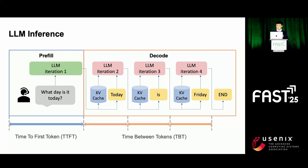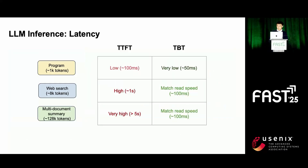We use two latency metrics for LLM inference. One is TTFT, which measures the time from input to the generation of the first output token — that is the prefill time. The other is TBT, the time interval between the generation of each output token, corresponding to the decoding time. Since the prefill stage completes all calculations at once, it is relatively computationally intensive, and its compute time grows quickly with input length. For example, with 128k inputs, it would take more than five seconds to get the first output token.